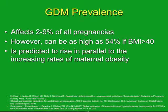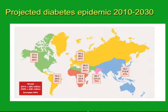How often do we encounter GDM? The prevalence can be as low as 2–9% of all pregnancies, but as high as 54% in women with a BMI over 40 — WHO obesity class 3 — as found in the SCOPE study. This figure is predicted to rise in parallel with increasing rates of maternal obesity. Globally, Africa is expected to see more than a 90% increased risk of type 2 diabetes between 2010 and 2030, directly linked to the obesity pandemic. These figures are worrisome.